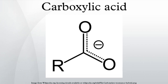Carboxylic acids occur widely and include the amino acids and acetic acid. Salts and esters of carboxylic acids are called carboxylates. When a carboxyl group is deprotonated, its conjugate base forms a carboxylate anion.